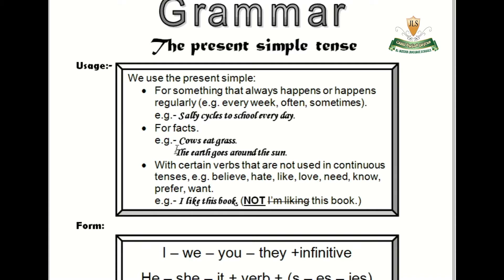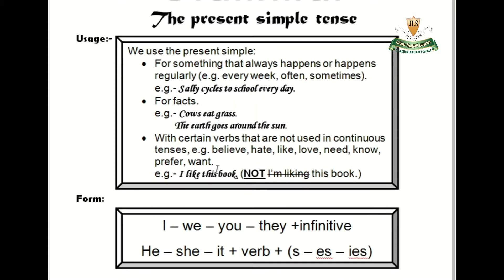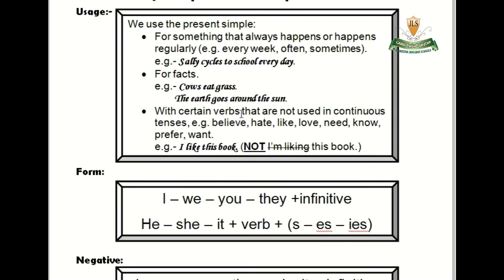We also use present simple for facts: cows eat grass, the earth goes around the sun. We also use it with certain verbs that are not used in continuous tenses — for example: believe, hate, like, love, need, know, prefer, want. These are called state verbs.